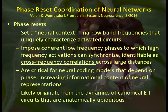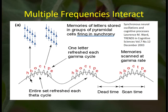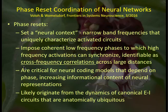Lower-frequency synchronization coordinates and organizes faster-frequency synchronization that allows us to recall character strings or other kinds of memories and learn tasks. All of these cognitive abilities are related to this process of cross-frequency phase nesting.